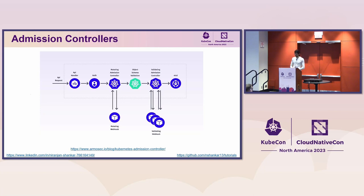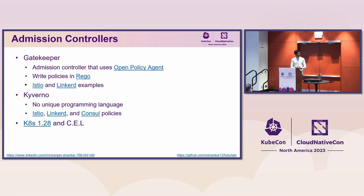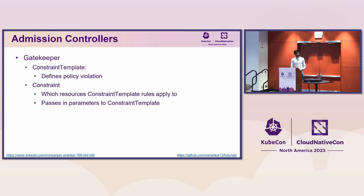Let's start with admission controllers — a brief overview of how this works in Kubernetes. When you create a resource manifest, it goes through certain mutations and validations before being persisted to etcd. The idea is to use a validating webhook to verify service mesh custom resources. One great solution we can leverage is Gatekeeper, an admission controller for Kubernetes that enforces policies through the Open Policy Agent. The examples I'm giving use Gatekeeper constraints written in Rego, though you could also use Kyverno or common expression language with Kubernetes 1.28.